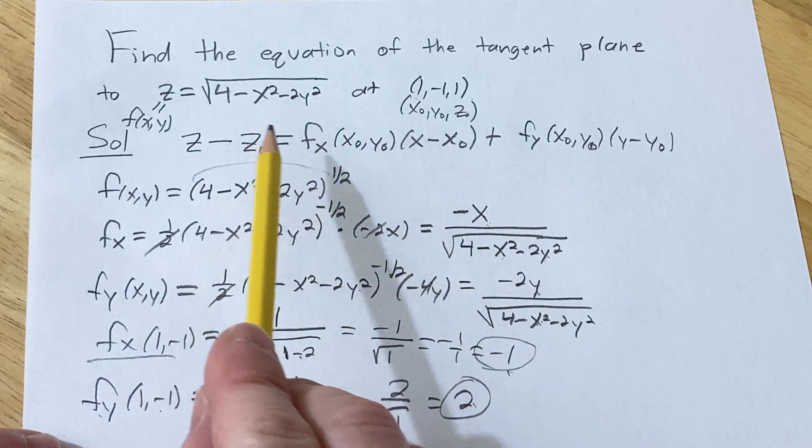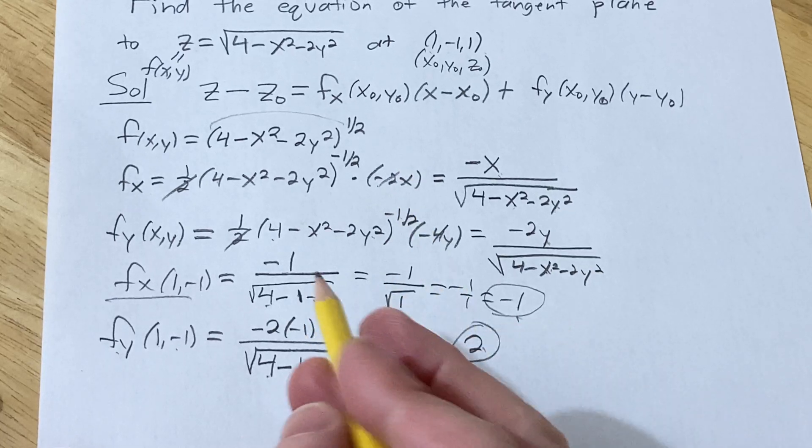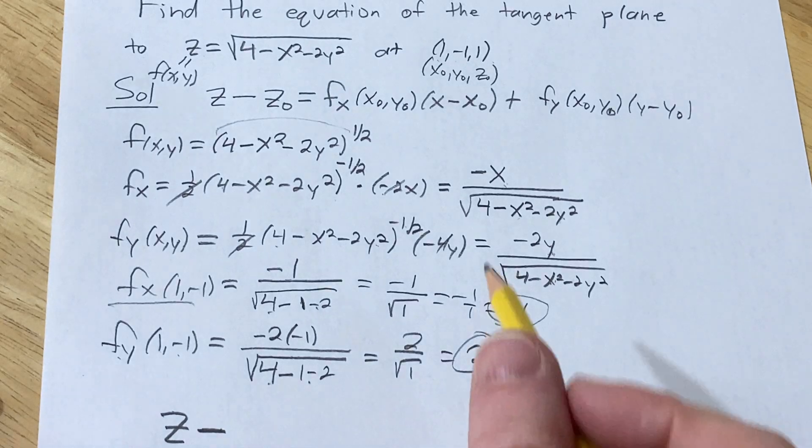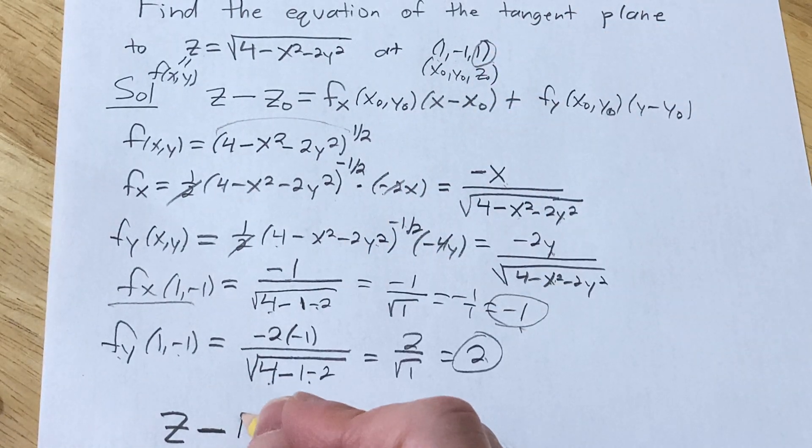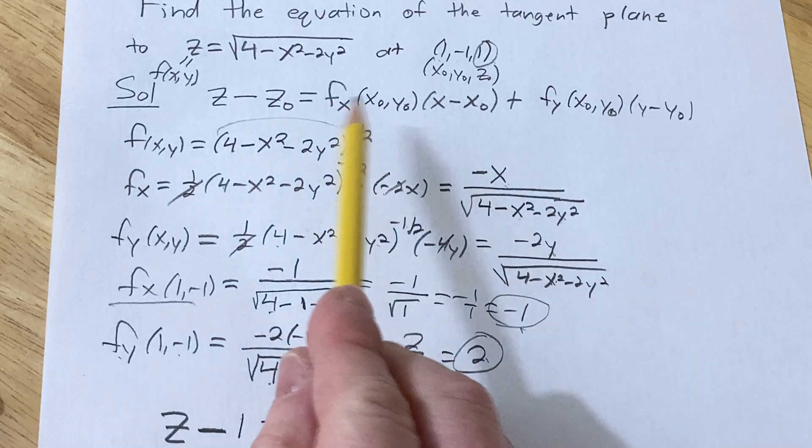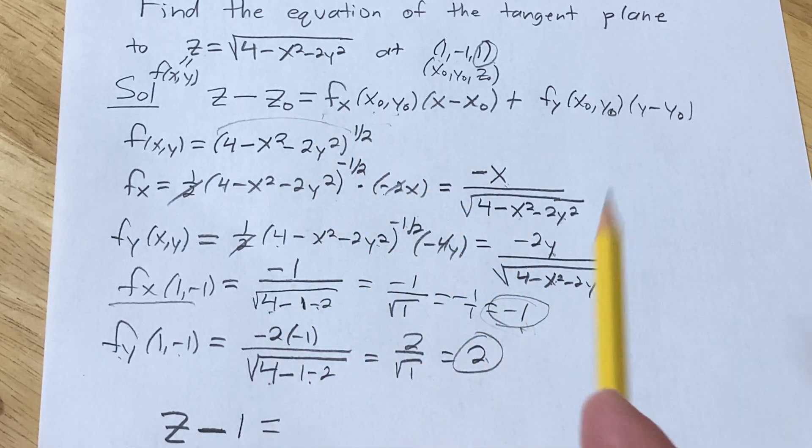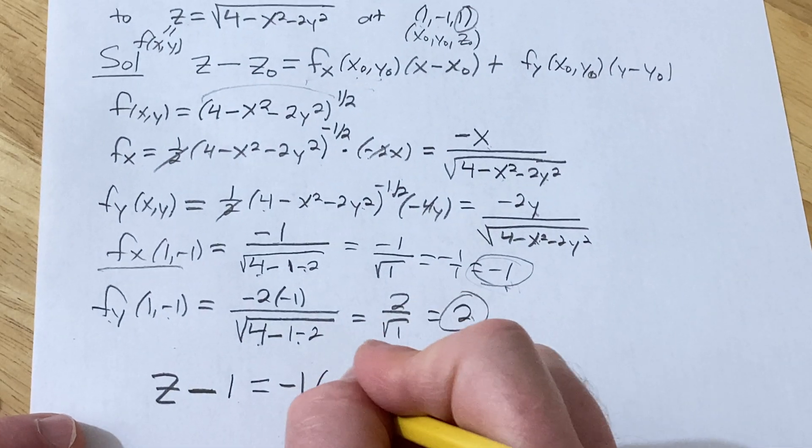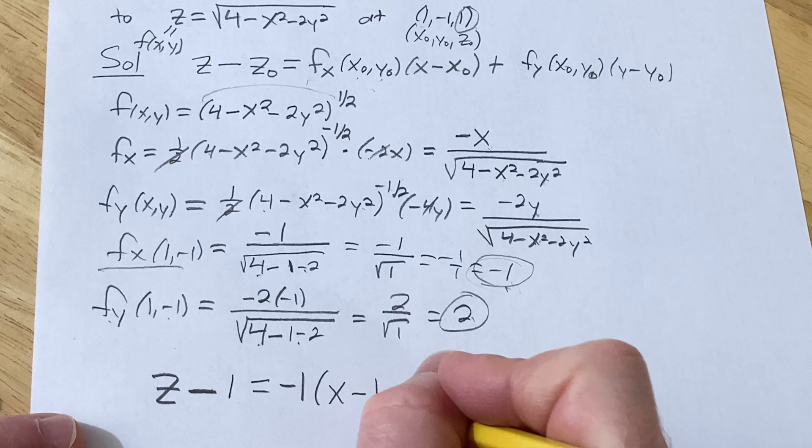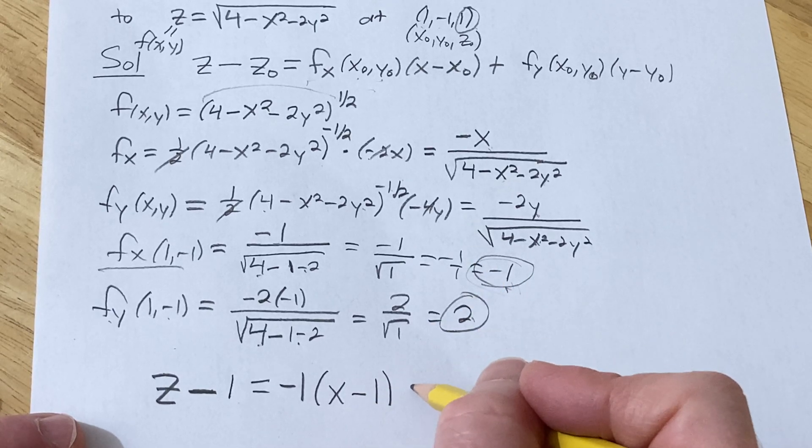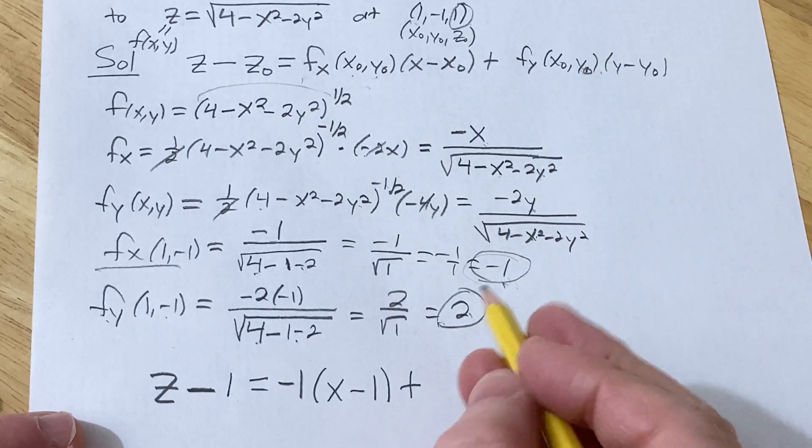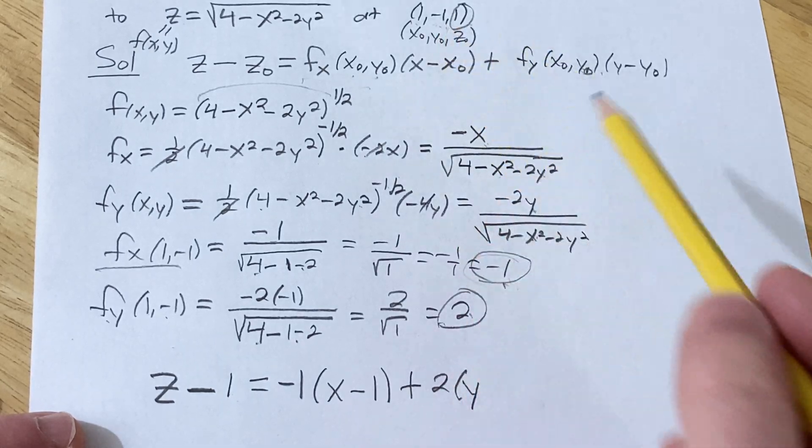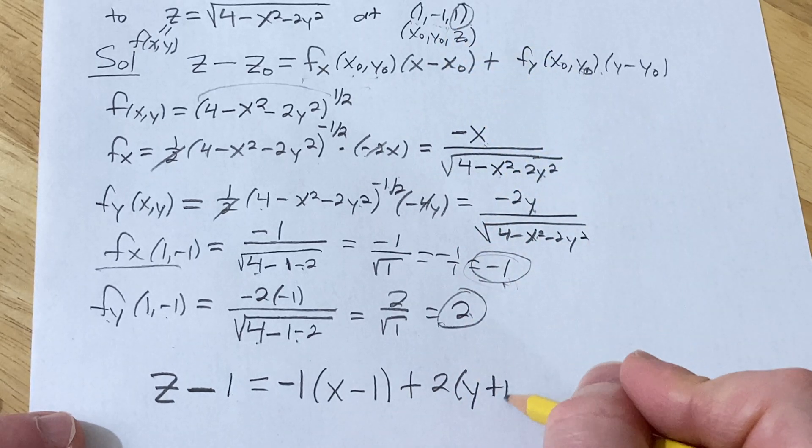Okay, so now we're going to plug everything into this formula we have up here, very carefully. So it'll be z minus z0, and we identified z0 at the beginning, we said that was 1, equals fx at (x0, y0). So that's going to be -1, it's going to be -1, and then (x - x0) which is 1, plus this one, so it's going to be 2 we worked that out. And then y, it's y minus (-1), so it's going to be (y + 1).